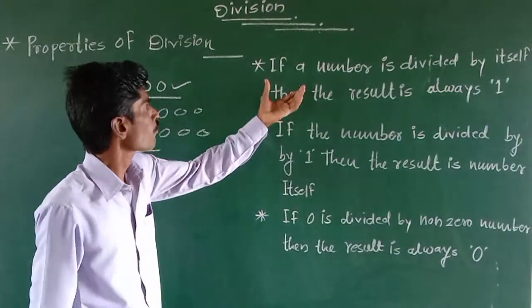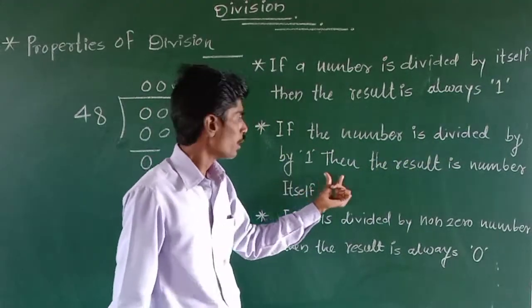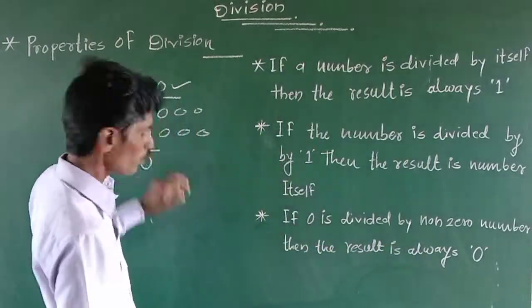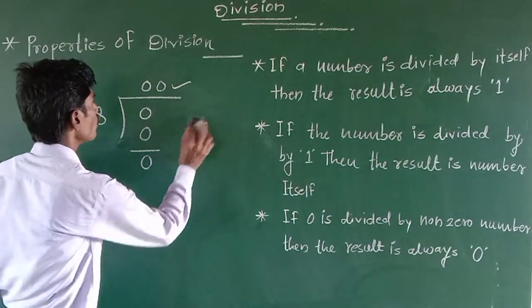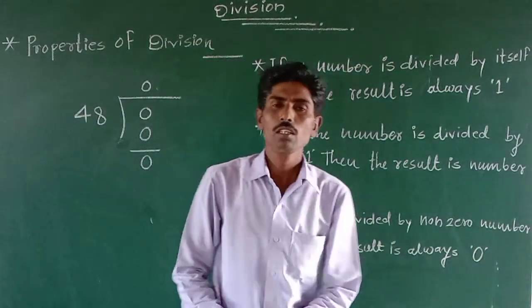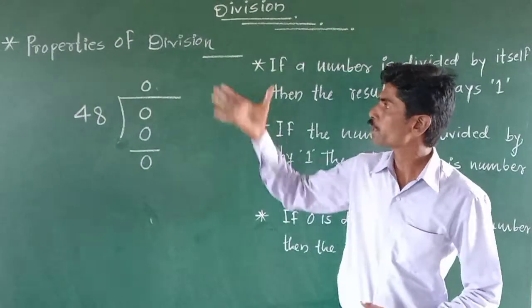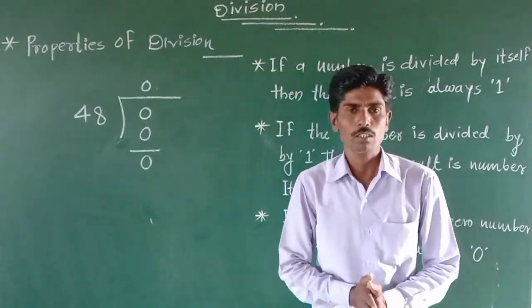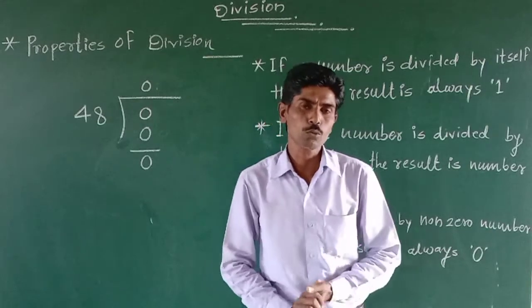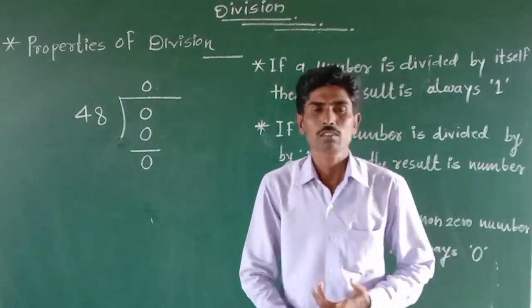To summarize the properties of division: first, if a number is divided by itself, the result is 1; second, if a number is divided by 1, the result is the number itself; and third, if 0 is divided by a non-zero number, the result is 0. Using these properties we can solve problems related to division. Today we have learned about division and its properties — I hope you understood. From tomorrow we will solve exercises on addition, subtraction, multiplication, and division. Thank you.